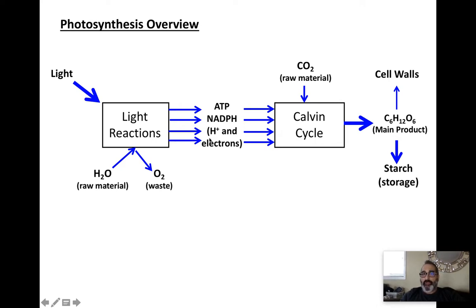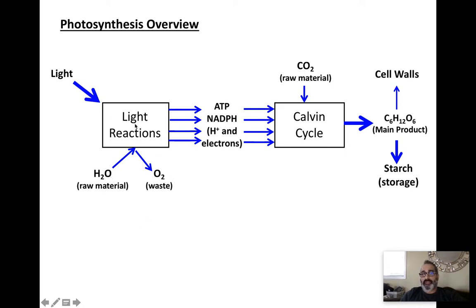NADPH is a molecule — NADP is the molecule — and it carries the hydrogens needed in the next part. NADPH includes hydrogen ions and electrons coming from the light reactions. So the two major products made in the light reactions are ATP and NADPH. NADPH includes hydrogen ions and electrons, all of which are needed in the Calvin cycle, where the plant takes in CO2 from the air and goes through a cycle of steps to create sugar as the main product.